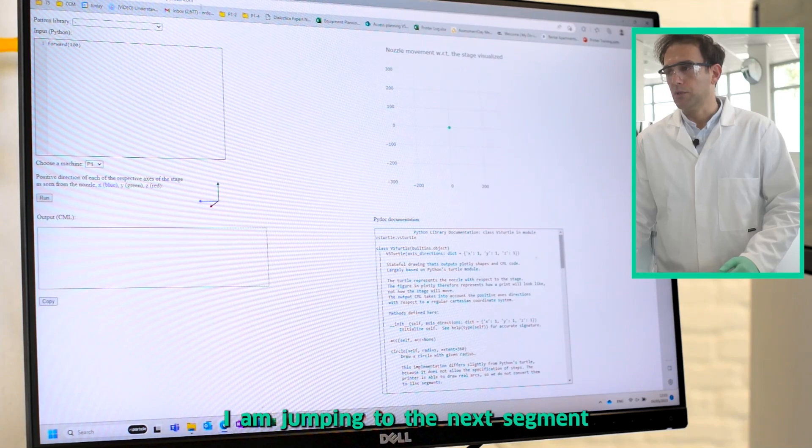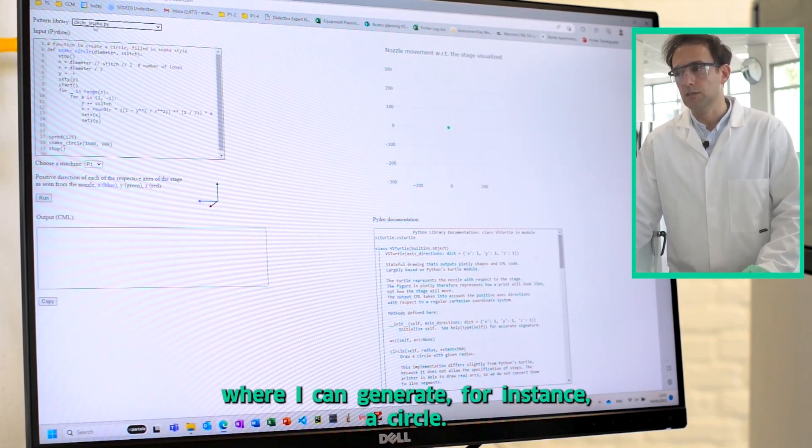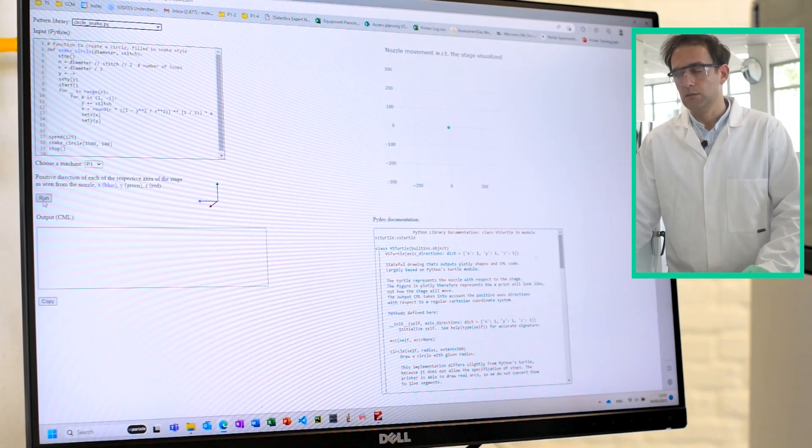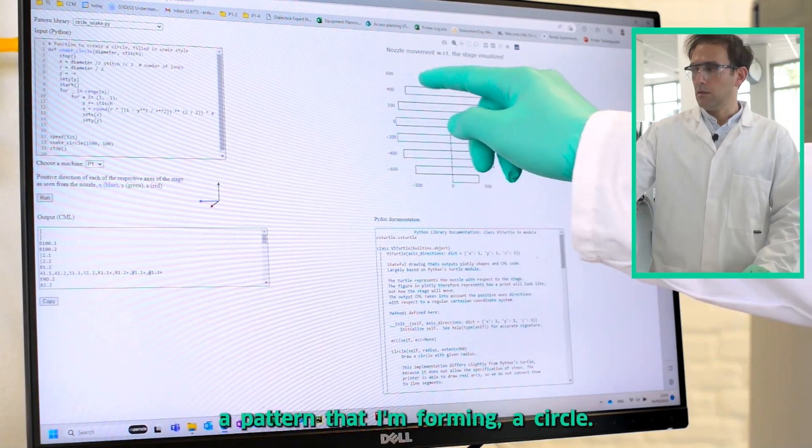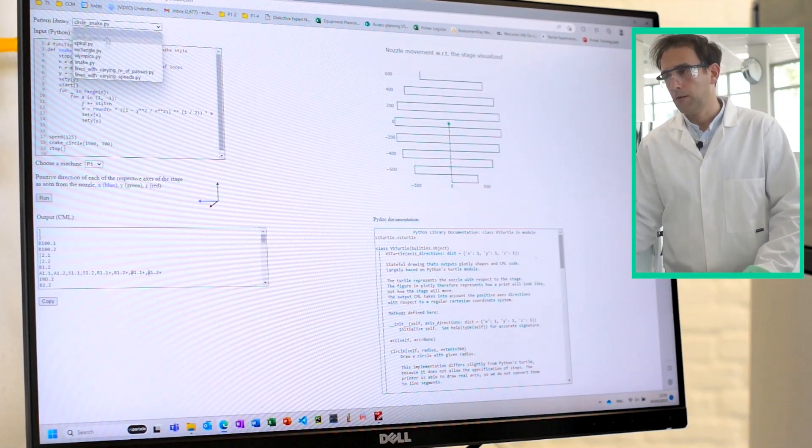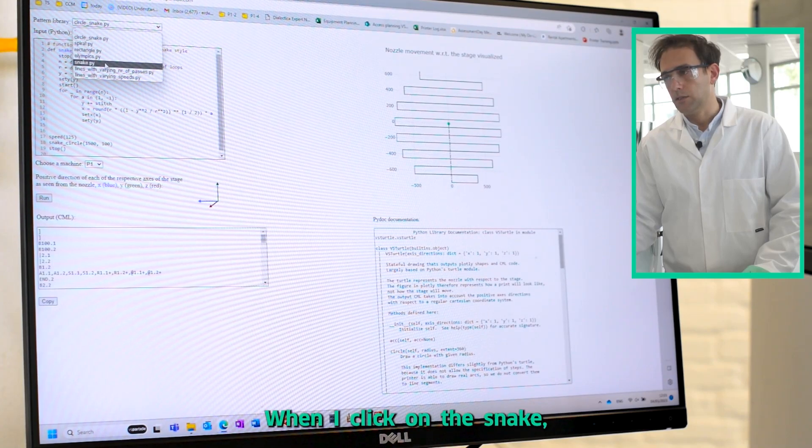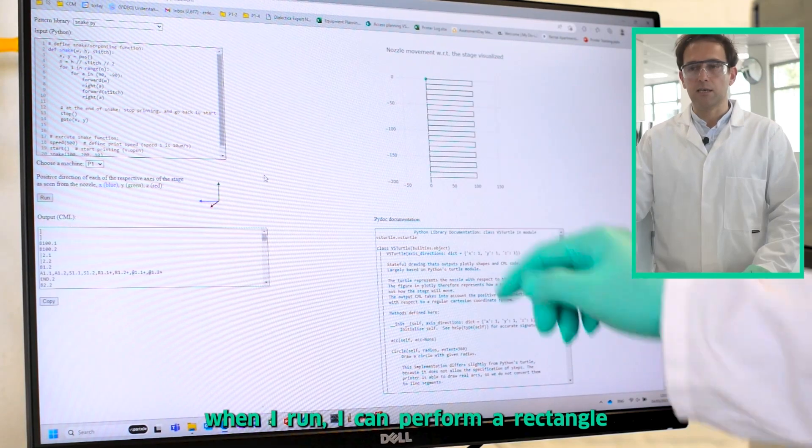I am jumping to the next segment where I can generate, for instance, a circle. When I click on run, I see a pattern forming a circle. When I click on the snake and run, I can perform a rectangle.